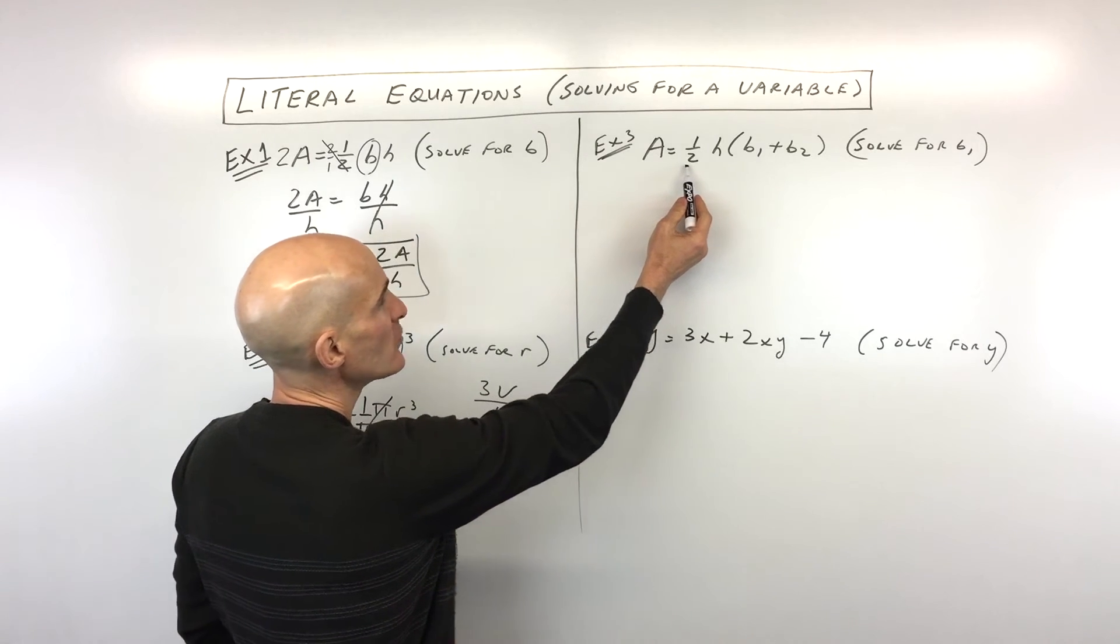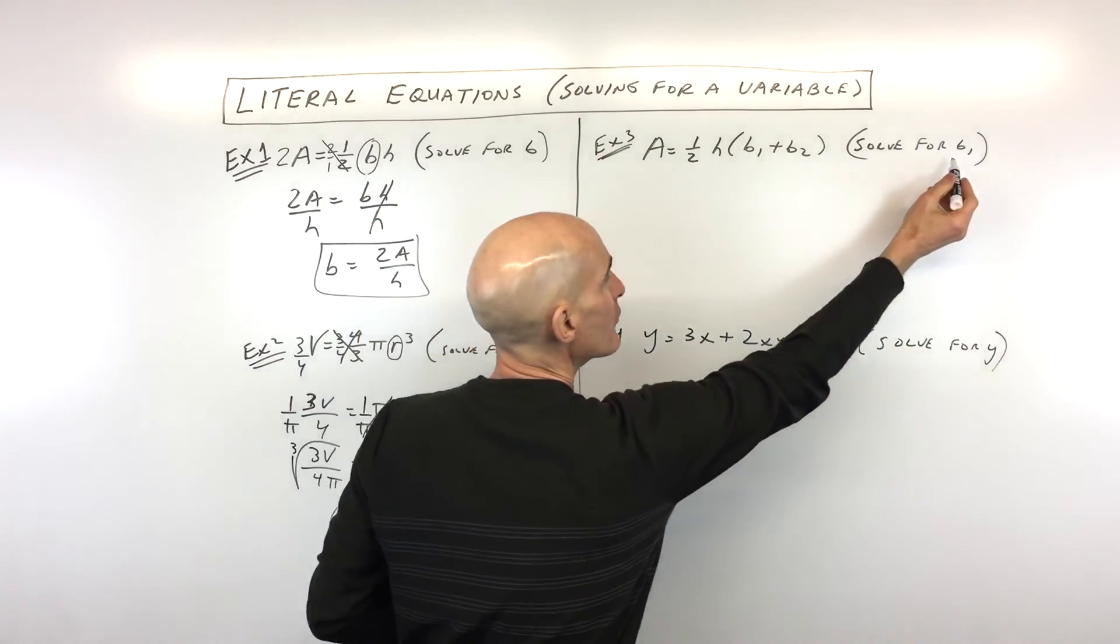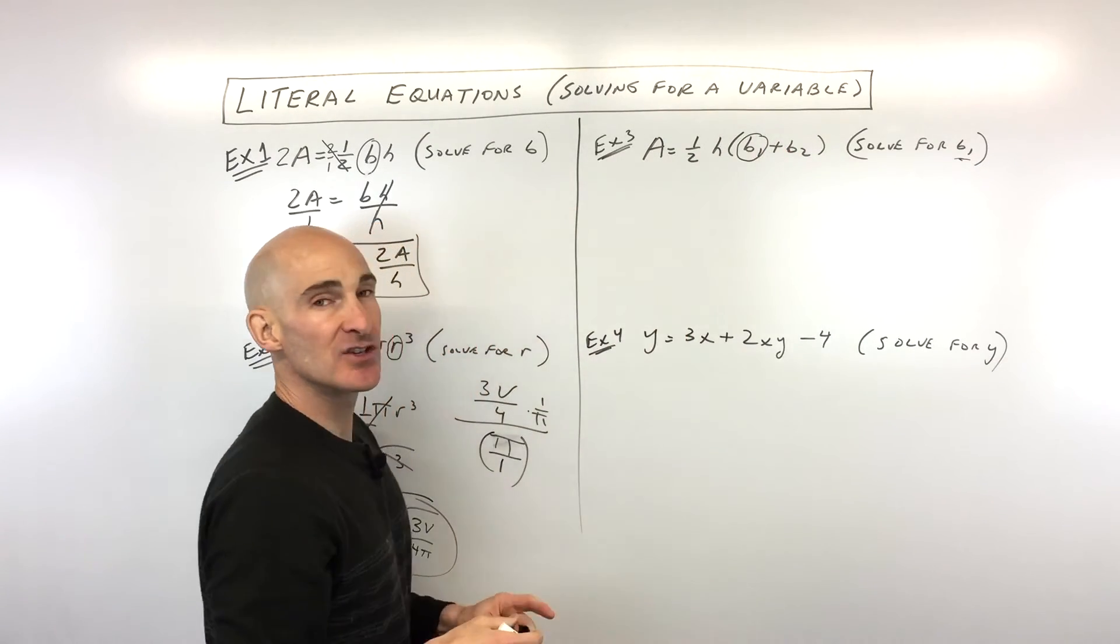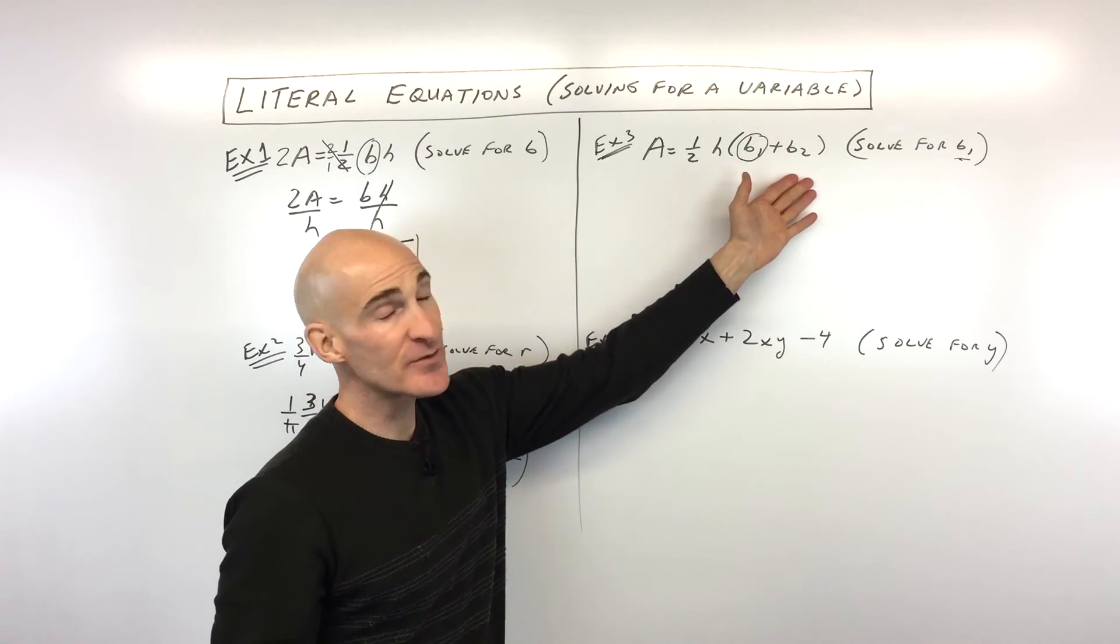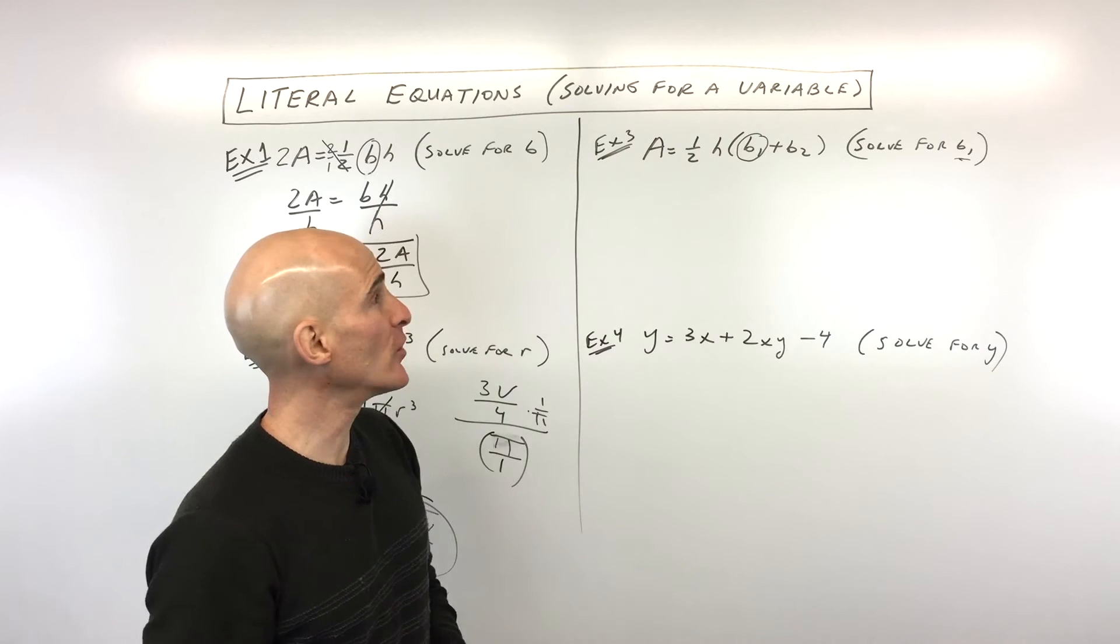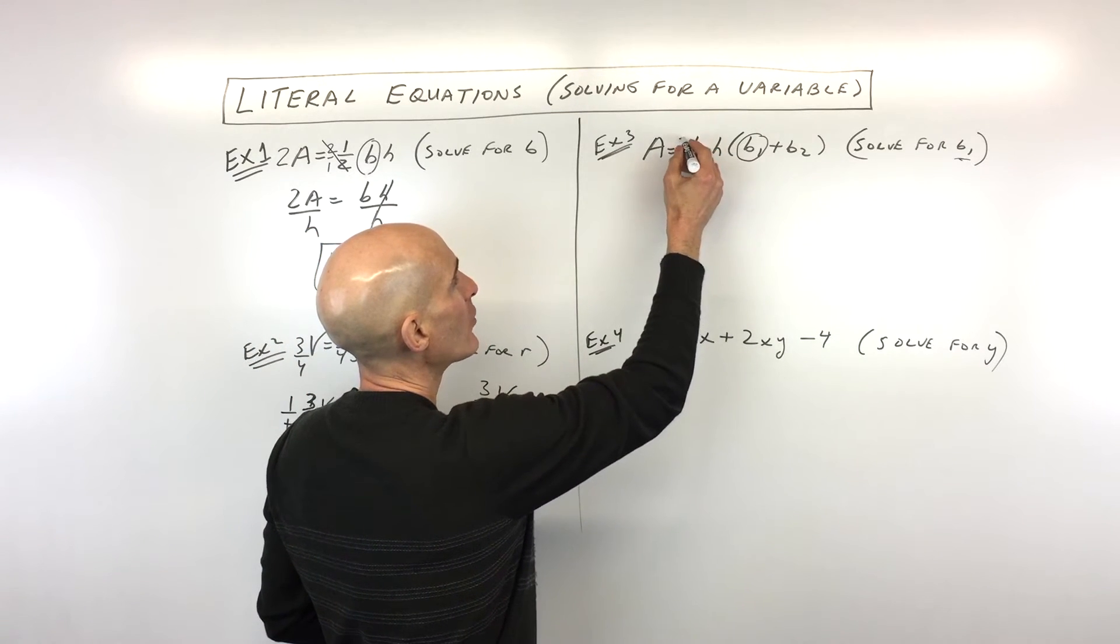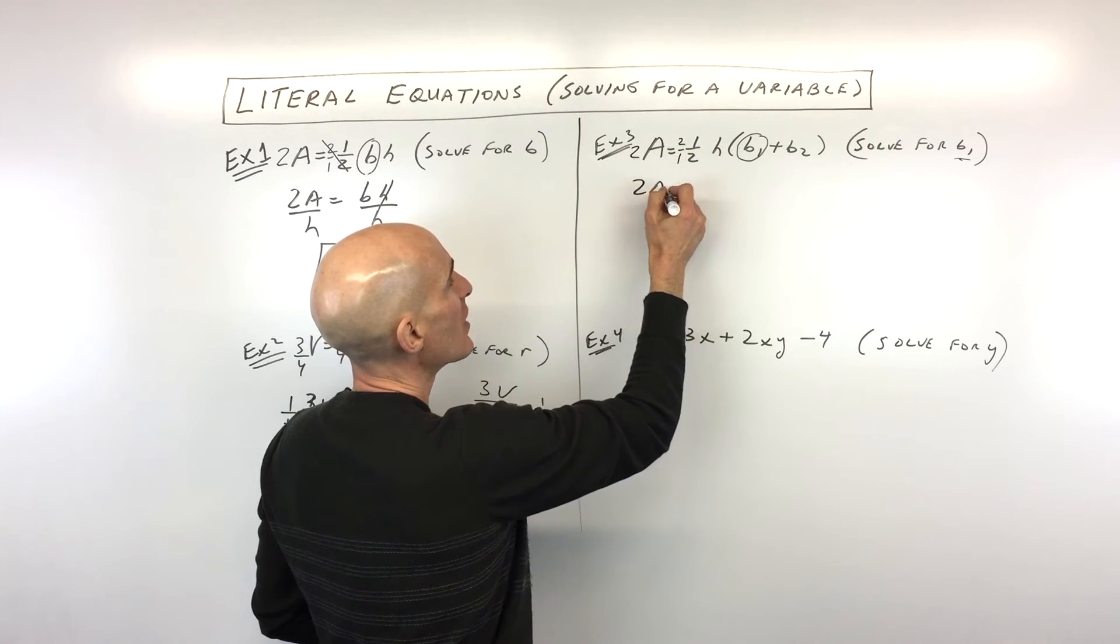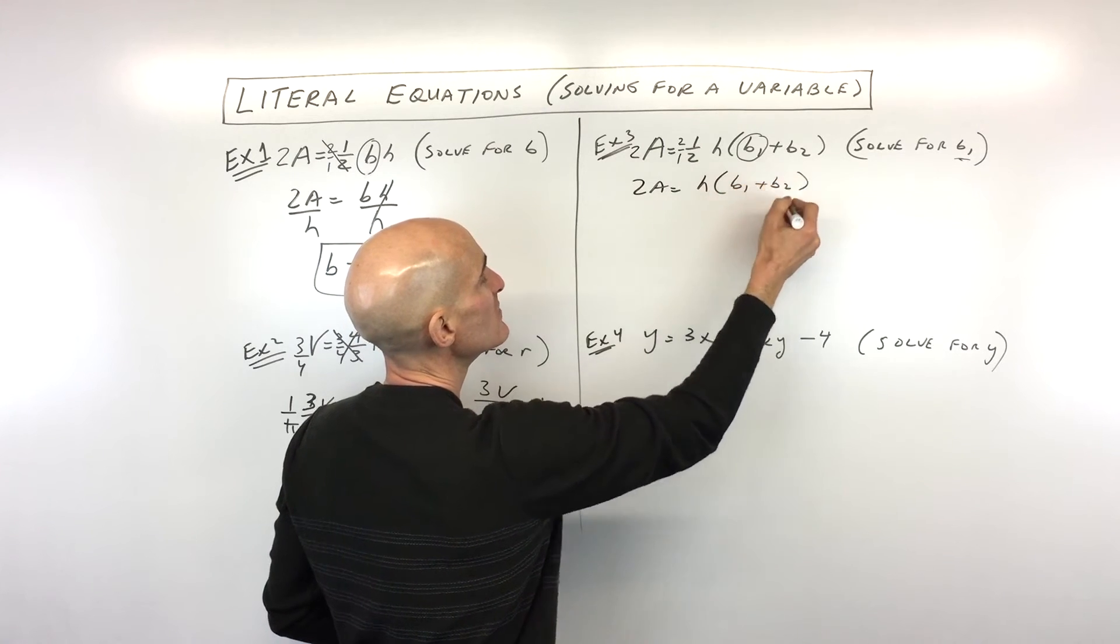This one we have A equals 1 half H times the quantity B1 plus B2. It says solve for B1. So that's this guy right here. Sometimes I like to circle it, but basically you're thinking about working from the outside in. Do the opposite. Now you might recognize this formula. Now this is a formula for the area of a trapezoid, but basically what we're going to do is we're going to get rid of this one half by multiplying by 2 over 1, which is just like multiplying both sides by 2. So now we're down to 2A equals H times B1 plus B2.